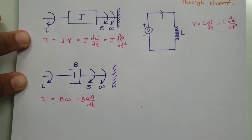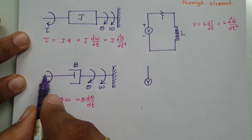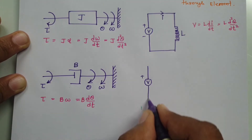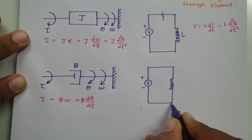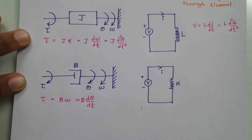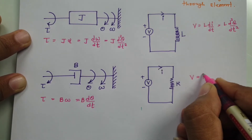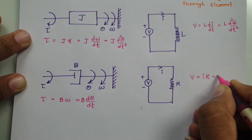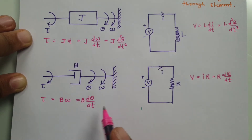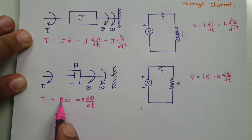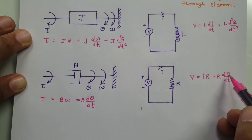In the electrical system, we replace torque with a voltage source. For damping constant B, we replace it with resistance R, with current I passing through the resistance. The voltage across this element is current times resistance R, which equals R·dq/dt. So in this analogy, resistance R replaces damping constant B, current I replaces angular velocity ω, and charge Q replaces angular displacement θ.